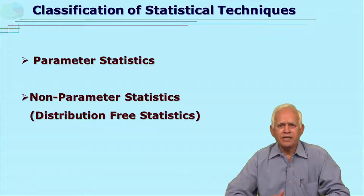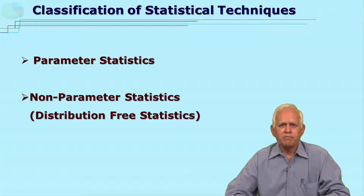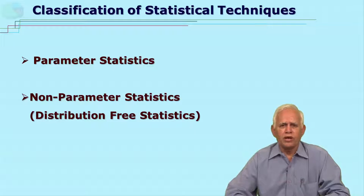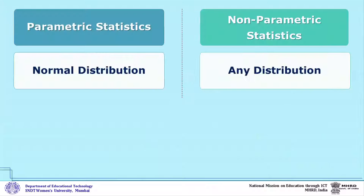Statistical techniques are classified under two categories: one is parametric statistics, and another is non-parametric statistics. The non-parametric statistics is also called distribution-free statistics. Let us understand the difference between parametric and non-parametric statistics. In parametric statistics, the data should have a normal distribution. In non-parametric statistics, it can be any distribution.